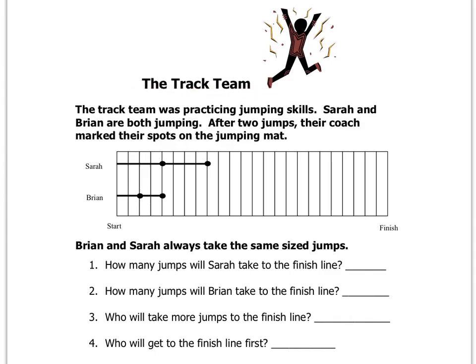Here we read the track team. The track team was practicing jumping skills. Sarah and Brian are both jumping. After 2 jumps, their coach marked their spots on the jumping mat. So Sarah jumped, it looks like, 4 bars in her first jump and 4 more bars in her second jump. Brian, it looks like he jumped 2 bars in his first jump and 2 more bars in his second jump. Looks like Brian doesn't jump as far as Sarah. Anyways, Brian and Sarah always take the same size jumps.